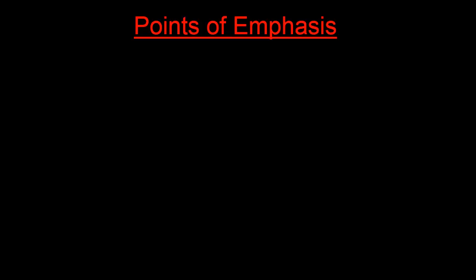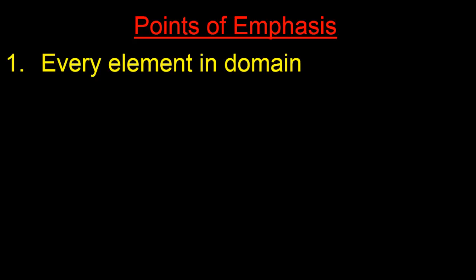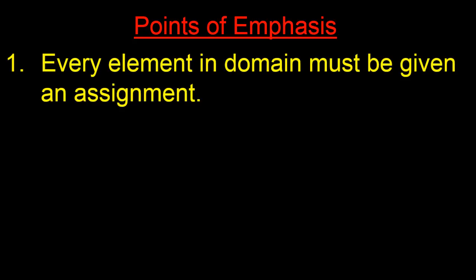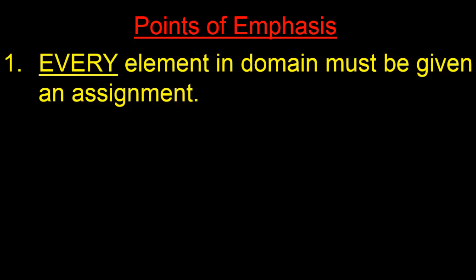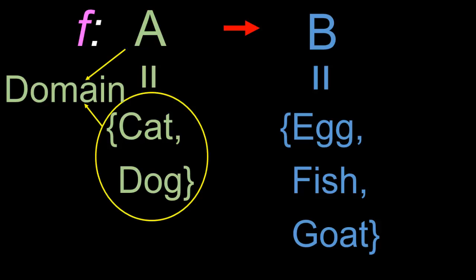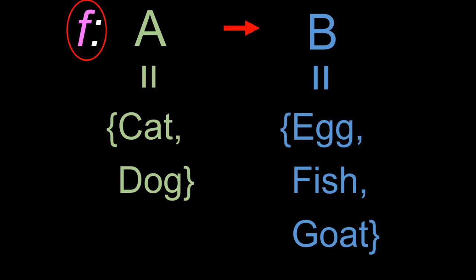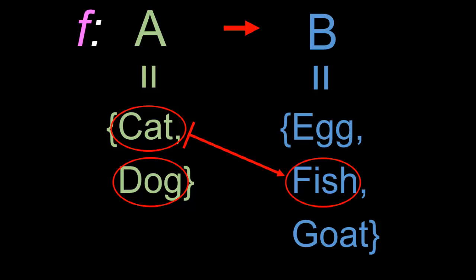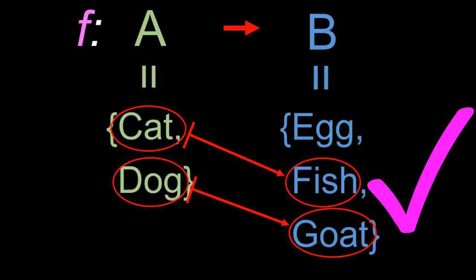Hence, a function f is a rule that assigns each element in the domain to exactly one element in the co-domain. So a function is really and simply nothing more than a simple assignment rule. We'll now like to emphasize four points regarding functions. The first point is that every element in the domain must be given an assignment — the important word here is every. In the case of our function f, the domain was A which consists of cat and dog, so f must assign both cat and dog to some element in B. We assigned cat to fish and dog to goat, so f was indeed a proper function.